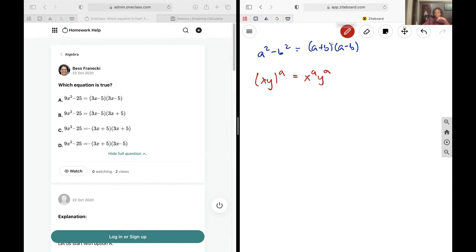In my case of 9x squared, how can I rewrite this in this form? I'm going to take it this way: I have 3 squared multiplied by x squared because 9 is 3 squared.